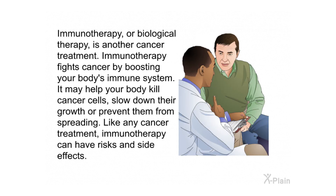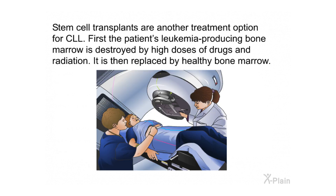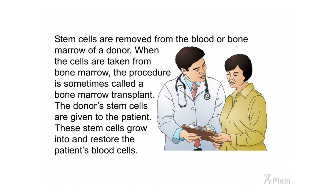Immunotherapy, or biological therapy, fights cancer by boosting your body's immune system. It may help your body kill cancer cells, slow down their growth, or prevent them from spreading, though like any cancer treatment it can have risks and side effects. Stem cell transplants are another treatment option for CLL: the patient's leukemia-producing bone marrow is destroyed by high doses of drugs and radiation, then replaced by healthy bone marrow. Stem cells removed from a donor's blood or bone marrow are given to the patient, where they grow into and restore the patient's blood cells.